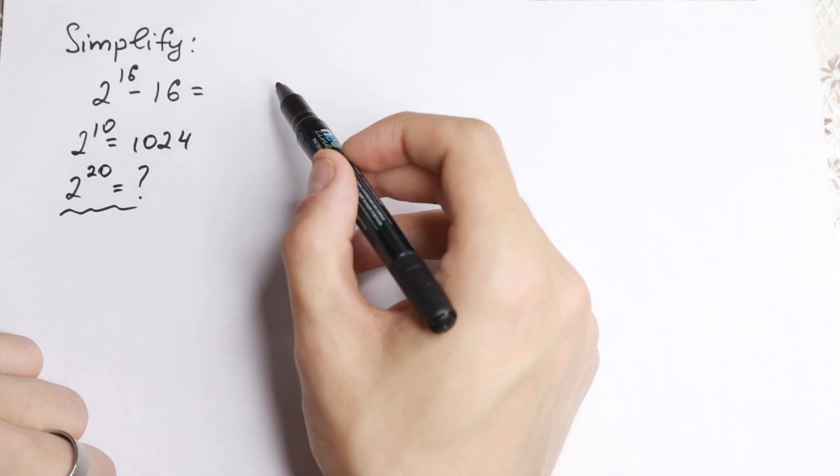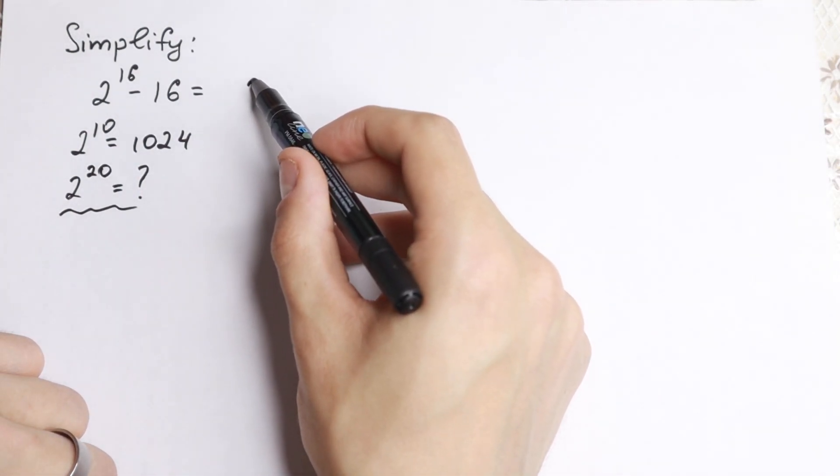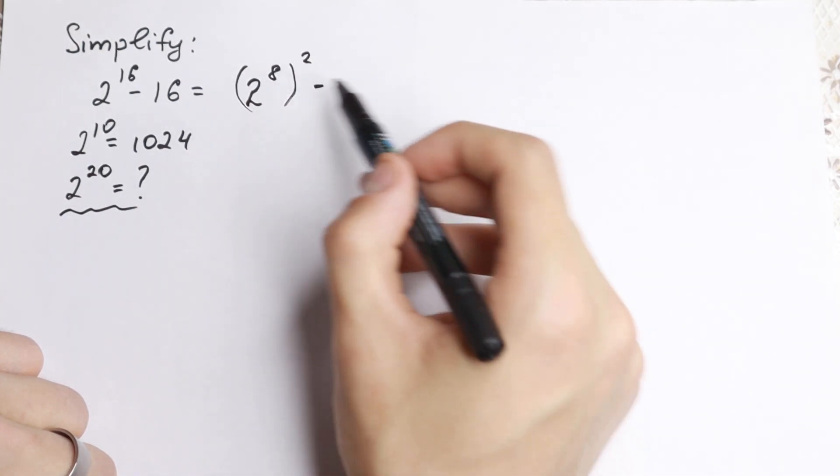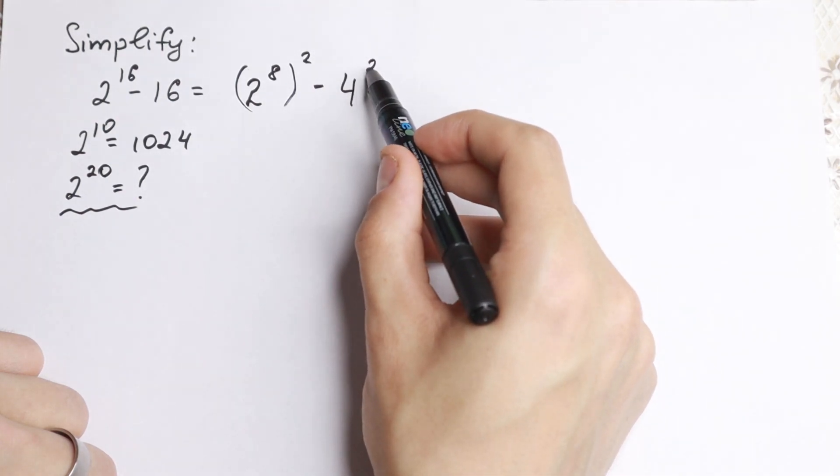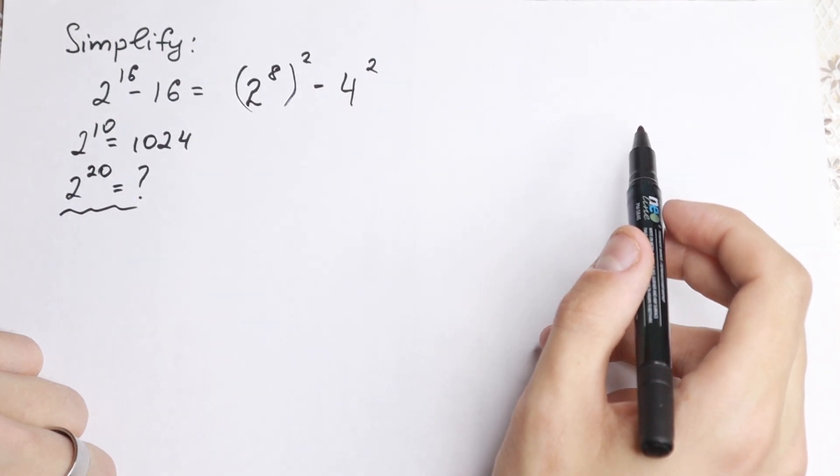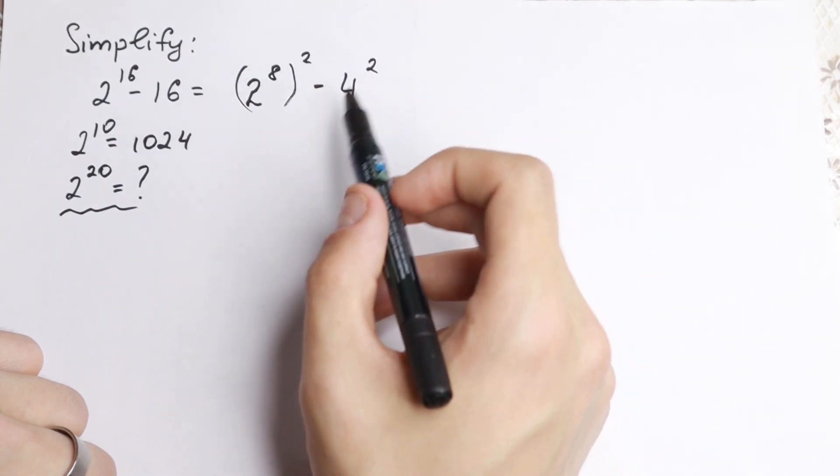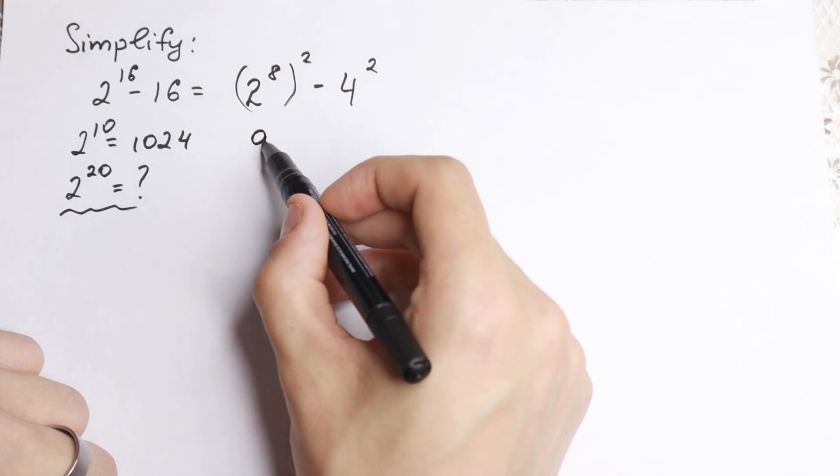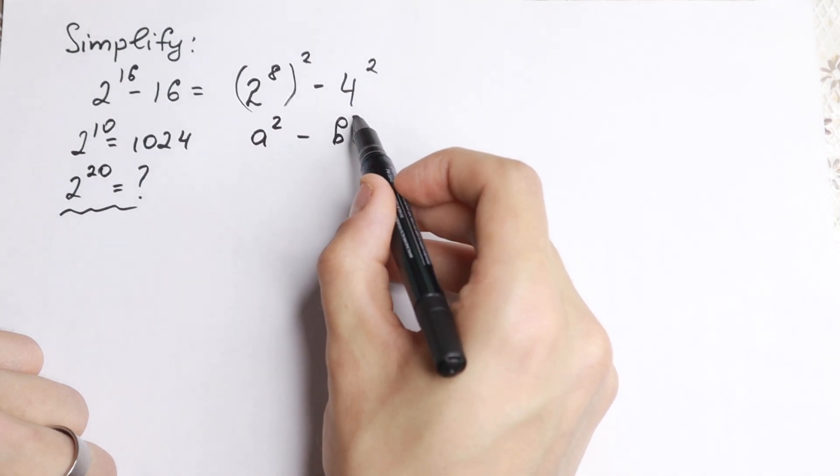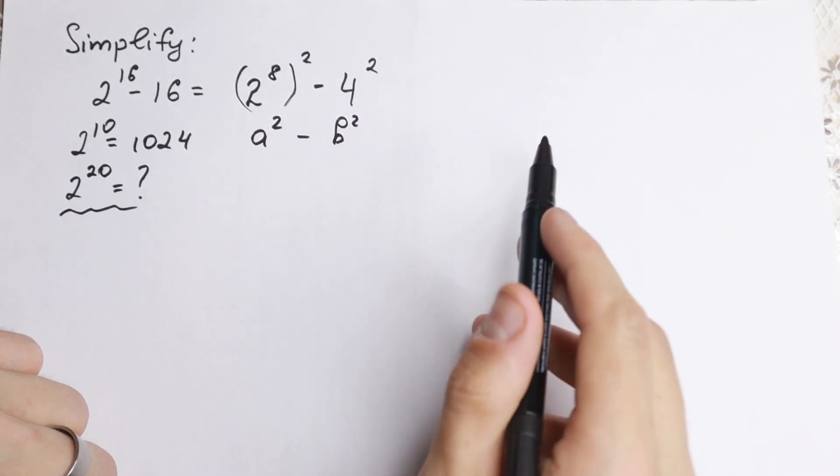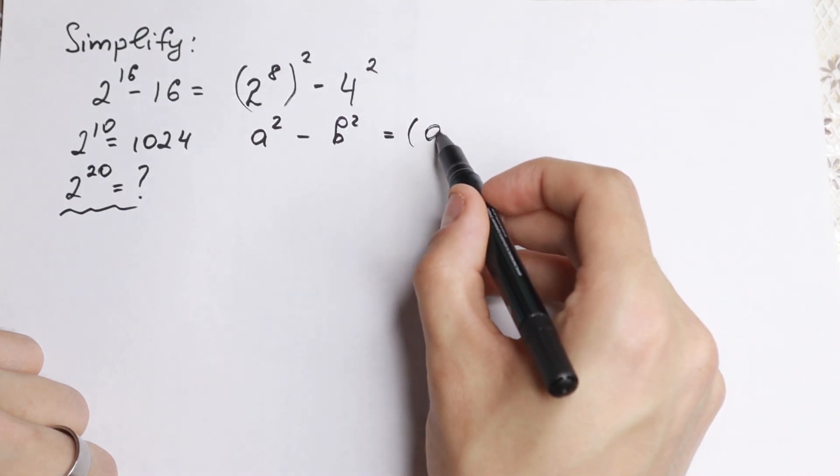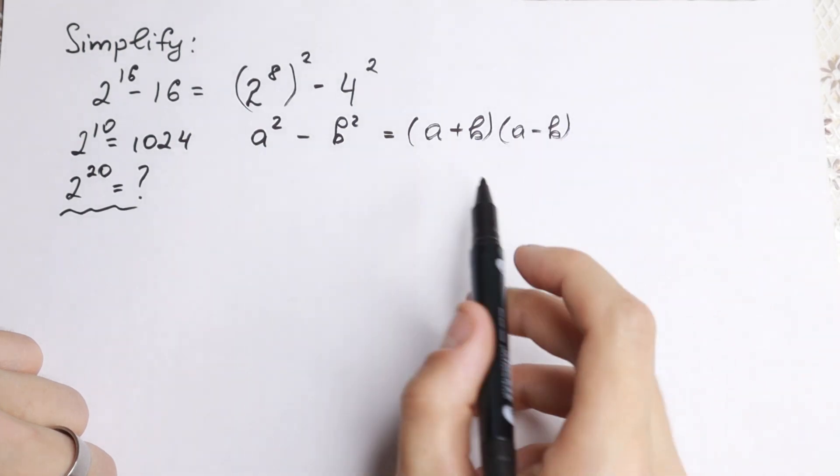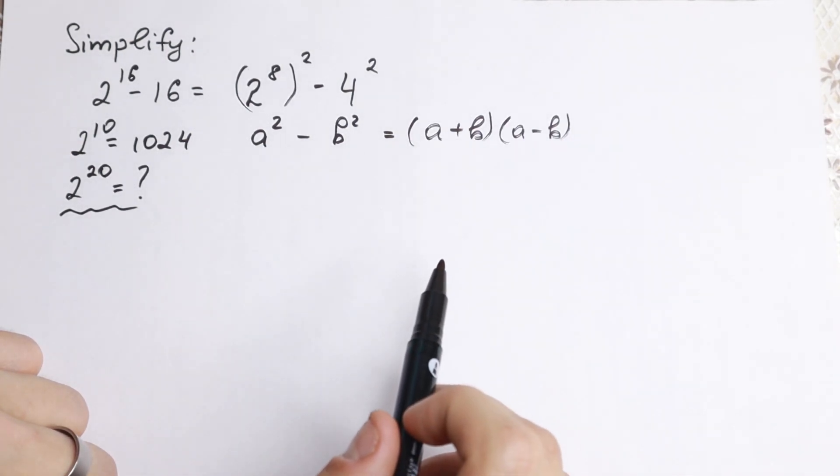I want to show you a really good trick. Let's write 2 to the 16th power as 2 to the 8th power squared, and minus 16, write as 4 squared. So why I write it this way? Because there are a lot of formulas in mathematics, and the best formula to simplify this is a squared minus b squared, which is equal to a plus b times a minus b. We have difference of two squares.